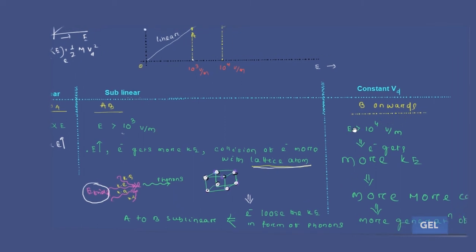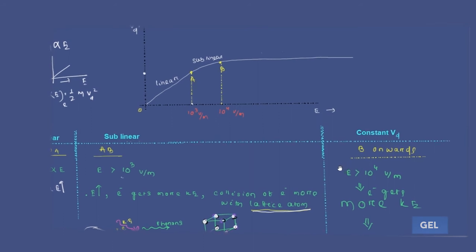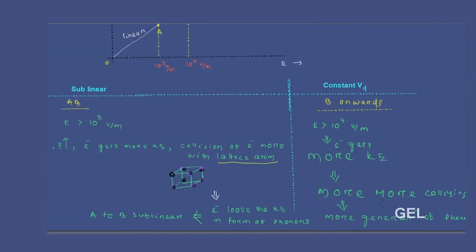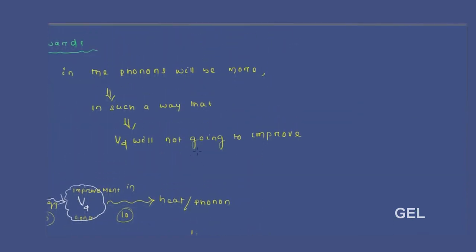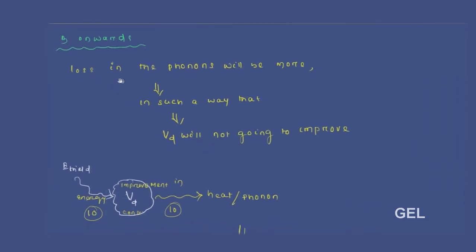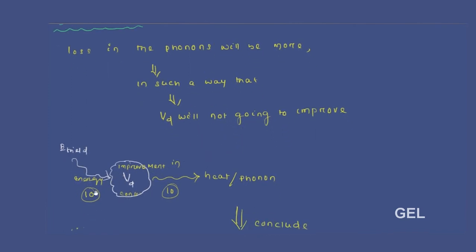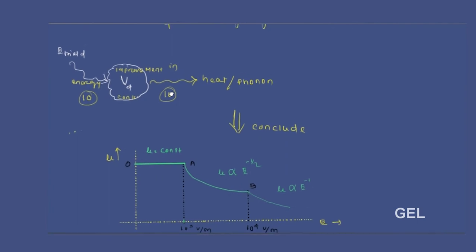From point B onwards, the same process continues but with even higher electric field — say 10⁴ V/m or more — electrons gain even more kinetic energy, causing more phonon generation. The loss due to phonons becomes so large that the drift velocity stops improving and becomes constant. So the improvement in drift velocity becomes constant from point B onwards.